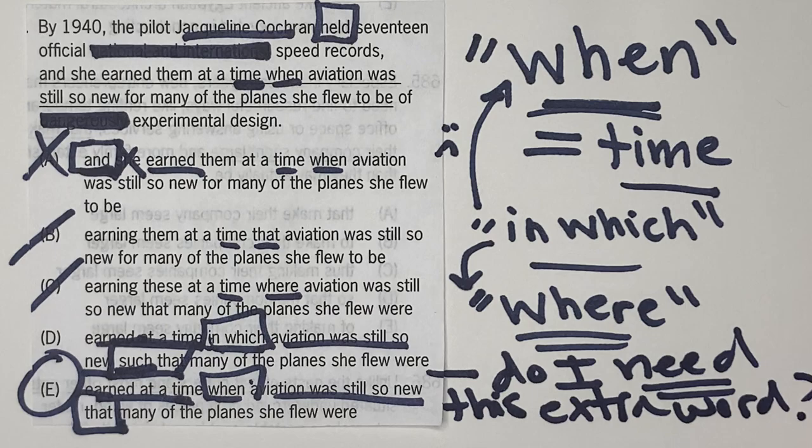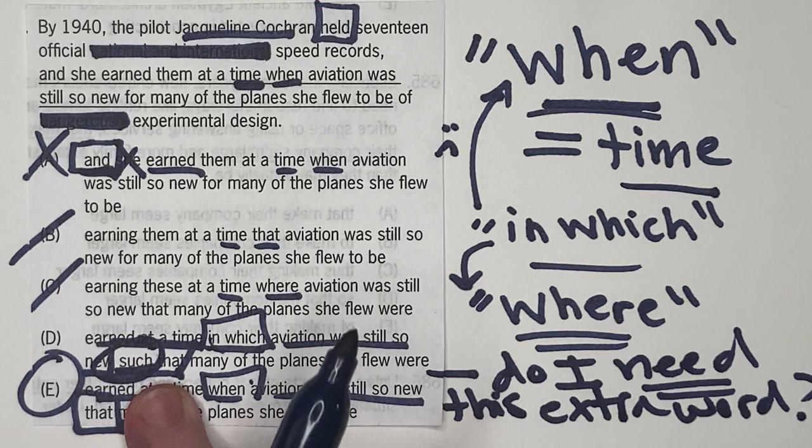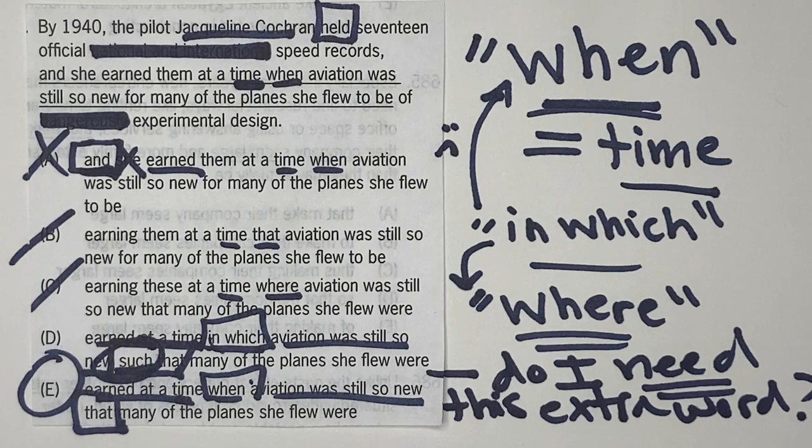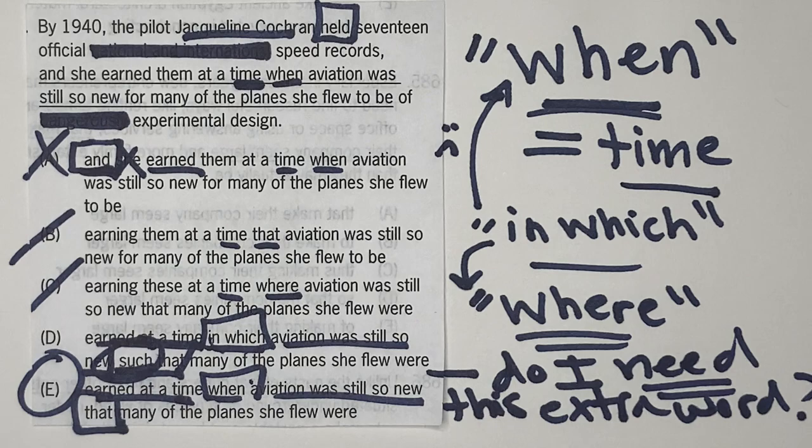And there's only two ways you can really justify it. If I need this word such, I'm saying that I need it because of an idiom, I need it because it's the correct idiom. Or I need it because of meaning, that if I didn't have it, the meaning would not be clear.